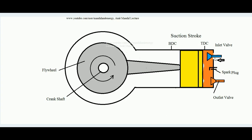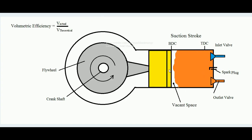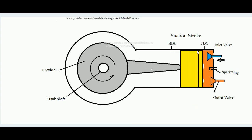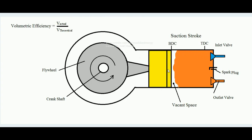At the beginning of the suction stroke, the inlet valve opens and the charge — shown here in red — starts going inside as the piston moves toward bottom dead center. But when the piston reaches the bottom dead center, you can see that the entire cylinder is not filled up with charge. There is a white vacant region remaining. The reason is that the engine operates at very high speed.